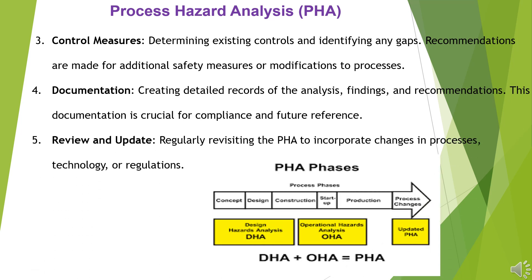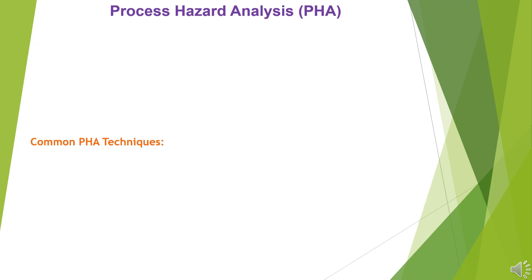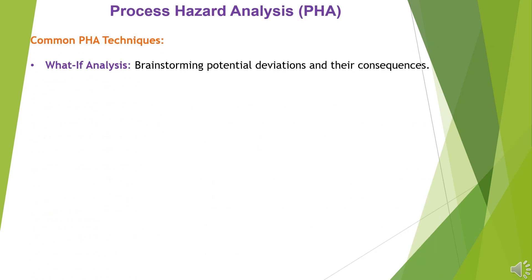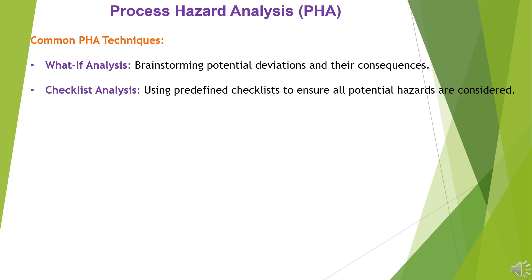5. Review and Update: regularly revisiting the PHA to incorporate changes in processes, technology, or regulations. 6. Common PHA Techniques: What-if analysis — brainstorming potential deviations and their consequences. Checklist analysis — using predefined checklists to ensure all potential hazards are considered.